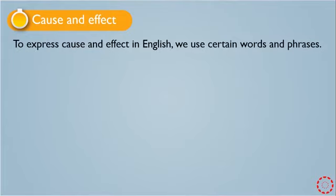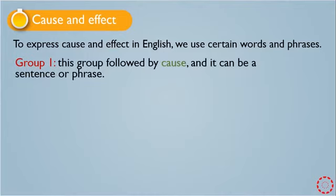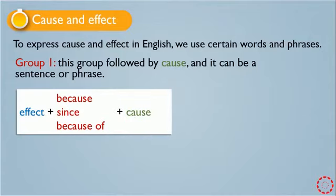We use certain words or phrases. We classified or divided these words into two groups. The first group is followed by cause, and it can be a sentence or phrase. This is the structure or form. We have a fact sentence and then we have these expressions for showing cause and effect — we have 'because,' and then we have 'since,' and 'because of.'